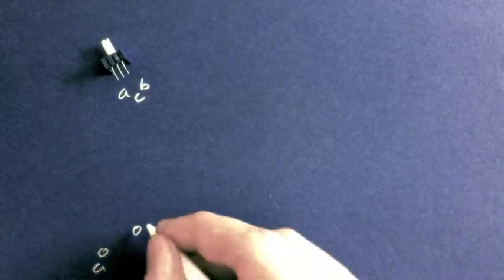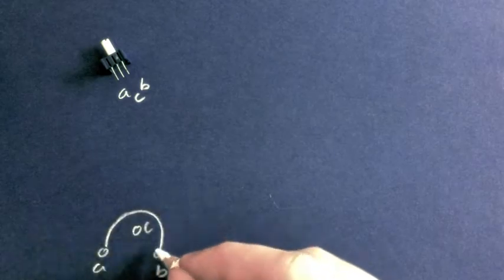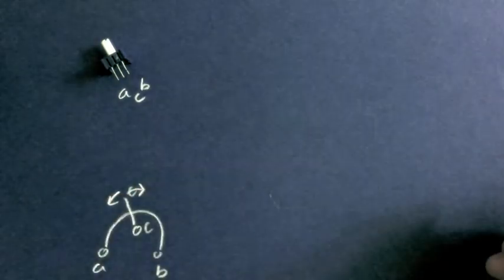And so how a potentiometer works is it has these three pins, A, B, C, and between A and B is a resistive coating. And C sticks into this resistive coating and can swing back and forth.